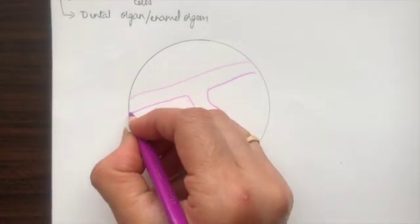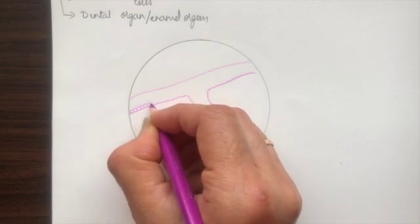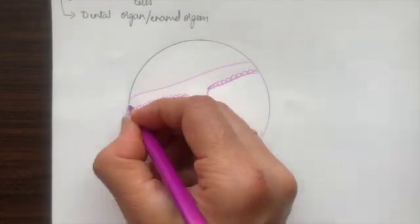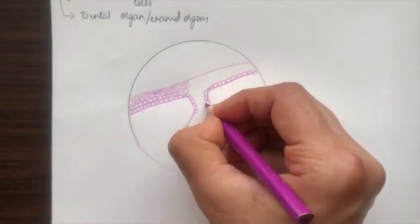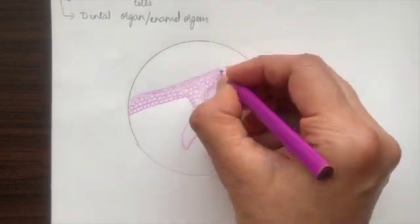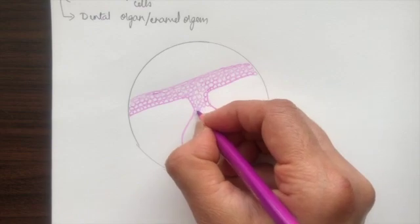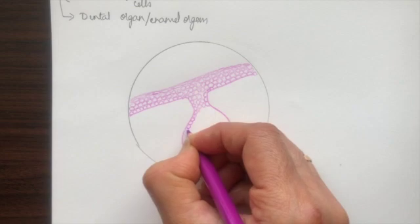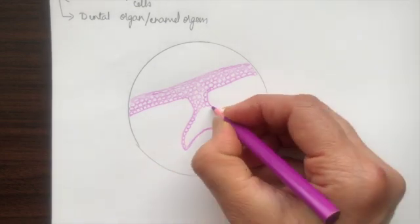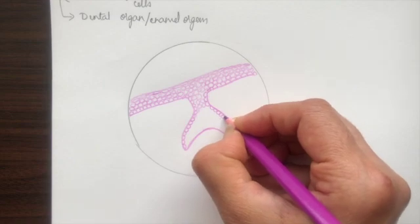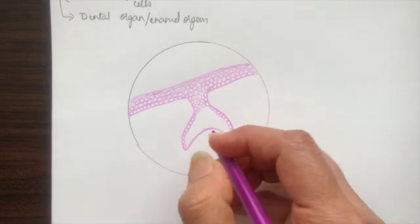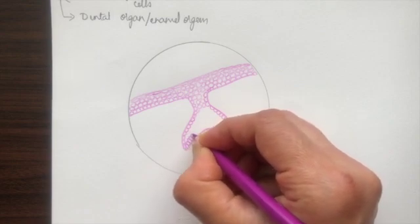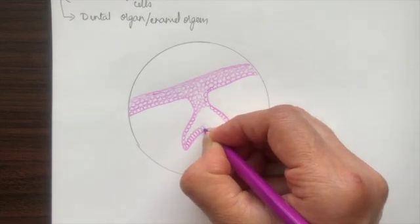Now we draw the cells of the oral ectoderm, similar to what we drew in the bud stage. Drawing the cells inside the cap: peripherally they are cuboidal cells, called outer dental epithelial cells. The inner lining will be low columnar cells called inner dental epithelial cells.